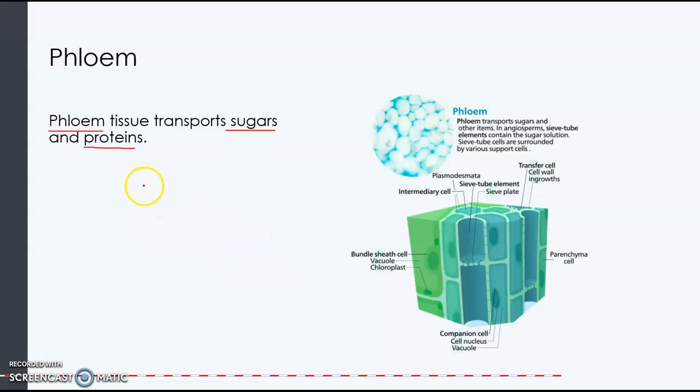Basically, the food that the plant produces is transported throughout the rest of the plant, and that tissue is called phloem.